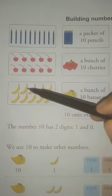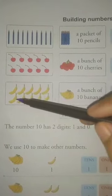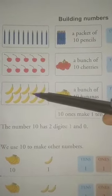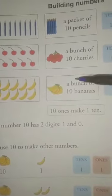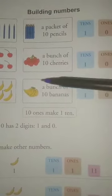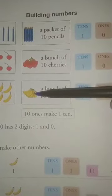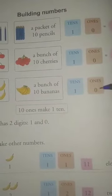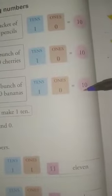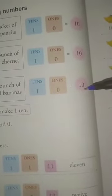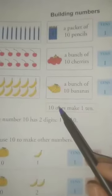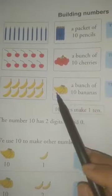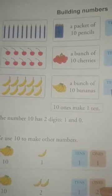1, 2, 3, 4, 5, 6, 7, 8, 9, 10 bananas. A bunch of 10 bananas. This is a bunch of 10 bananas, which means 1 tens and 0 ones is equal to 10. 10 ones make 1 ten.